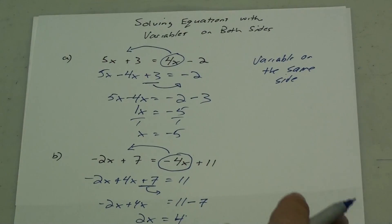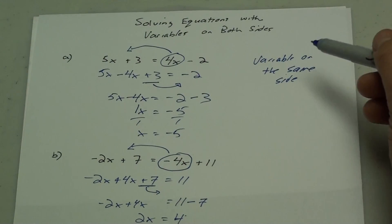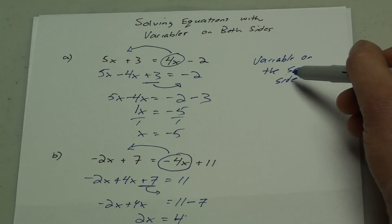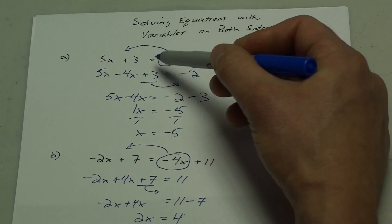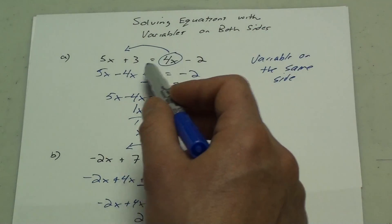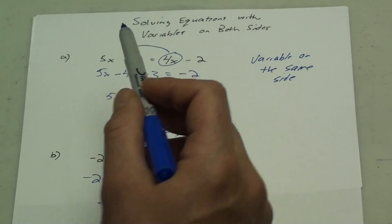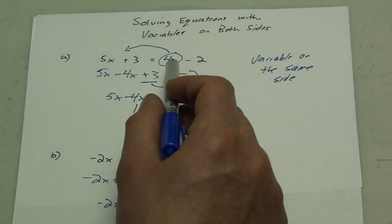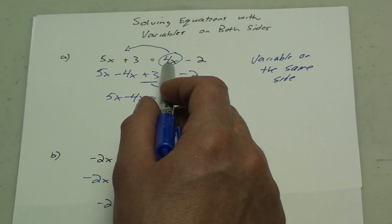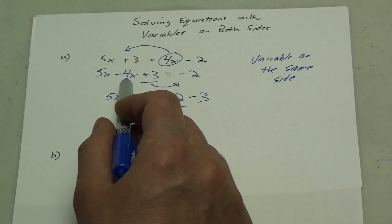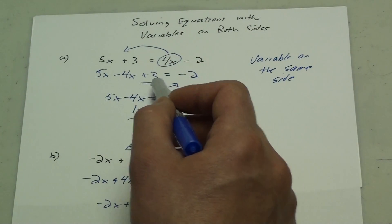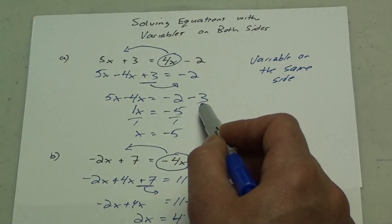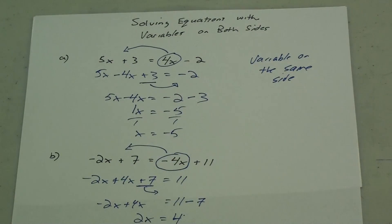So I'm solving equations with variables on both sides — I want to get the variables onto the same side. When they move across the equal sign, they turn into their opposite: positive 4x turns into a minus 4x, a positive 3 turns into a minus 3 on the other side. Thank you very much.